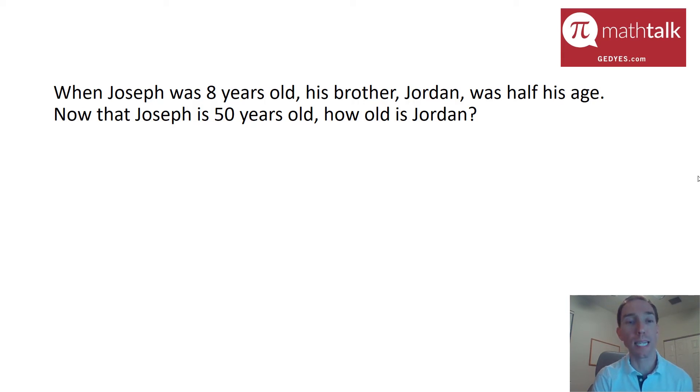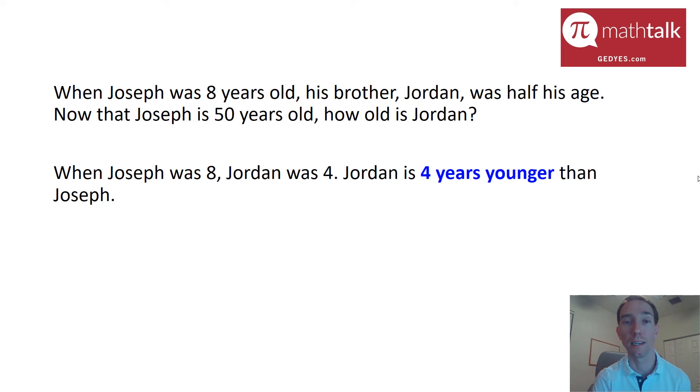Let's take a look at why that's not the answer. When Joseph was eight years old, his brother Jordan was half his age. What that means is when Joseph was eight, Jordan was four. That means Jordan is four years younger than Joseph. He's not always going to be half as old as Joseph. That's not how aging works. It's really important to know that Jordan is four years younger than Joseph, and Jordan is always going to be four years younger. So whenever they tell us what Joseph's age is, Jordan is just Joseph's age minus four. So now that Joseph is 50, Jordan is 50 minus 4, which is 46. The answer is definitely not 25, it is 46.